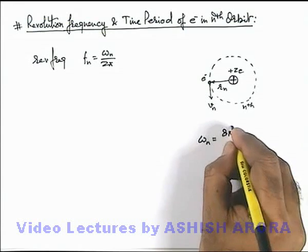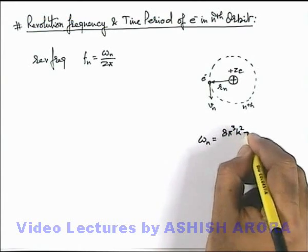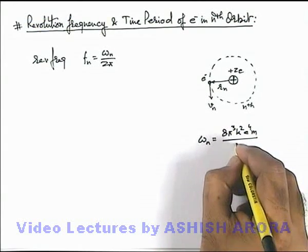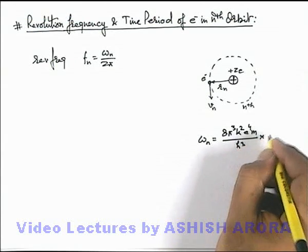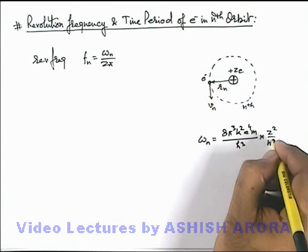We can see it is given as 8π³ k² e⁴ m by h³ multiplied by z² over n³.